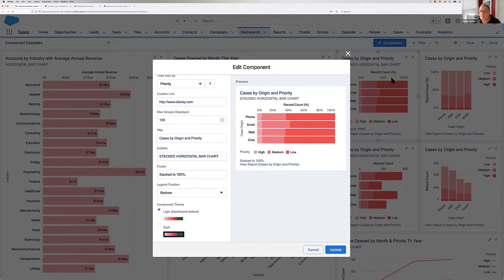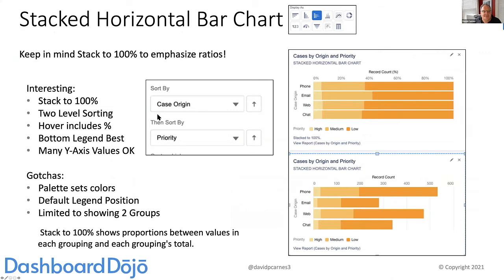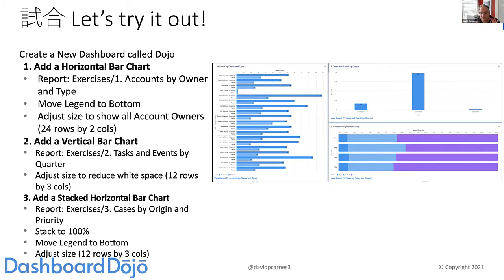So that's horizontal stacked bar. We also have the vertical stacked bar, but before we get to that, let's do a hands-on exercise. If you have the AppExchange app installed, you can use the source reports — they're in folders called Exercises, numbered for each one. For exercise one, adding a horizontal bar chart, the source report is Account Owner Accounts by Owner and Type. The steps: move the legend to the bottom, adjust the size, add a vertical bar chart, and also add a stacked horizontal bar chart to see what the three look like.